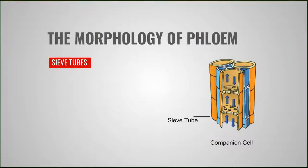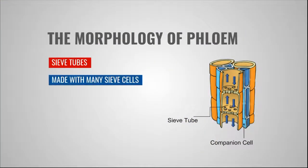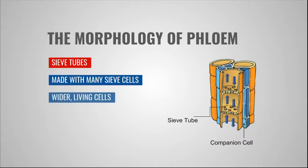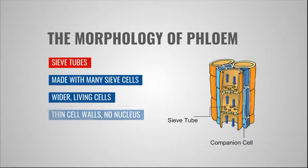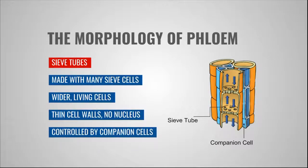Let's talk about a few here. Sieve tubes are made with many sieve-like cells stacked on one another. These cells are living with thin cell walls and wider in size. They do not contain any nucleus; instead, they only have vacuoles with surrounding cytoplasm. To control these cells, there are companion cells, and the nucleus of these companion cells controls the morphological activity of sieve tube cells.